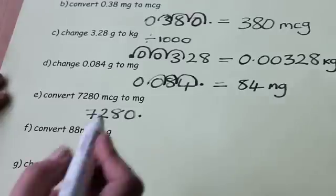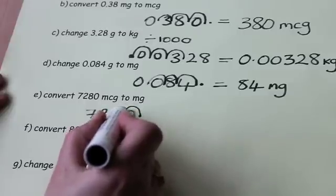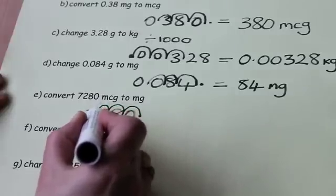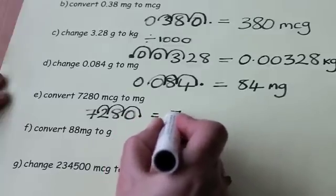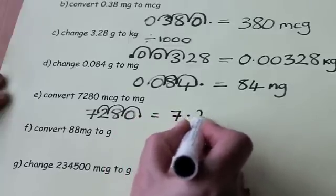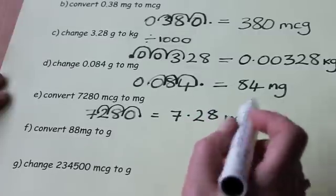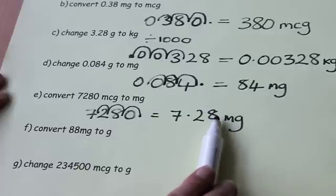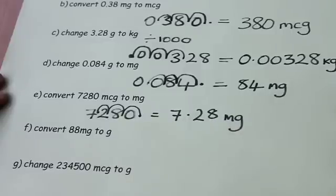And now we can follow our rules to move it. So to divide by 1,000, we'll go back to the left three places. One, two, three. And so our answer here is 7.28 milligrams. Can you see that I haven't put the zero at the end? Because it just means there's nothing there. And this is a much neater way writing the number.